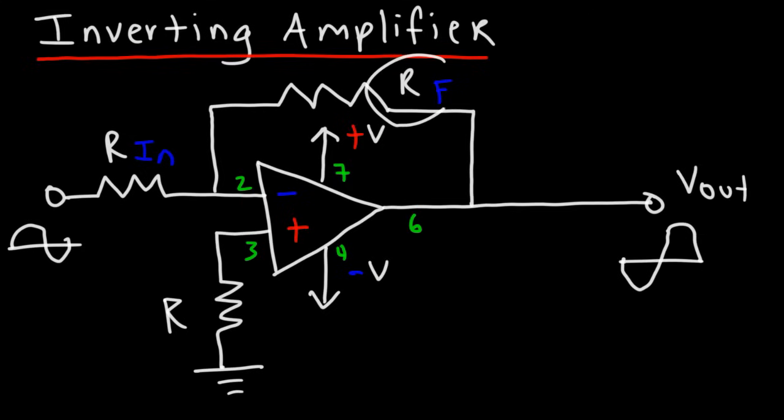RF is known as the feedback resistor. This resistor takes some of the output signal and feeds it back to the input. So as a result it reduces the voltage gain.